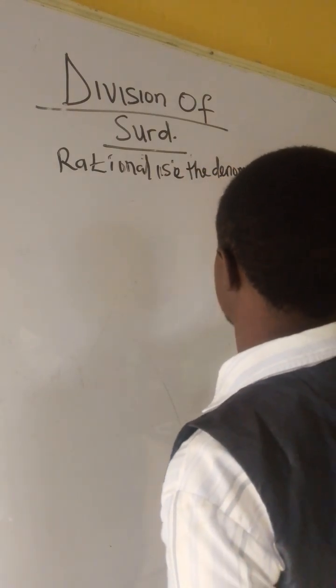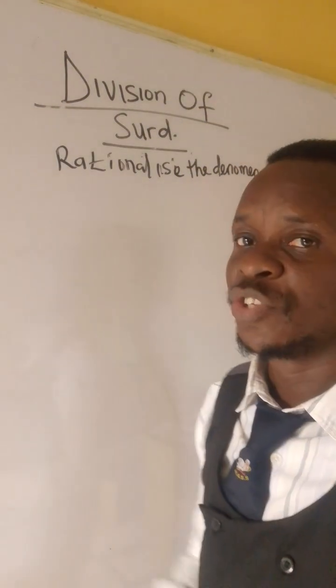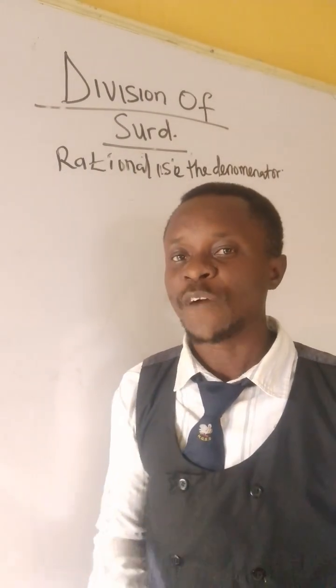Now, what does that mean? It simply means to multiply the numerator and denominator by the root of our denominator.